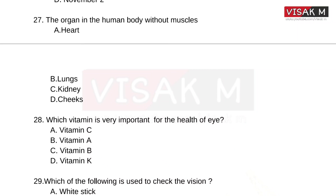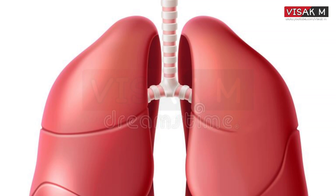The organ in the human body without muscles — which organ in the human body is not made of muscles? Options: A, Heart; B, Lungs; C, Kidney; D, Cheeks. The answer is Option B — Lungs.